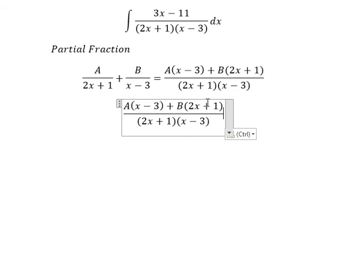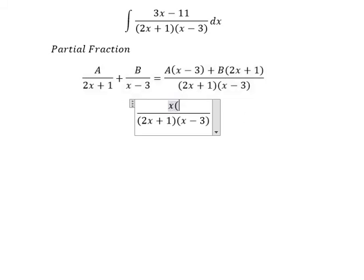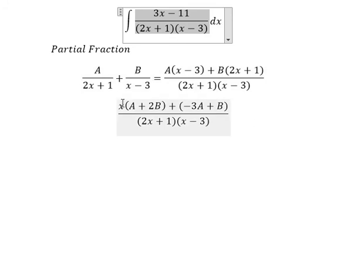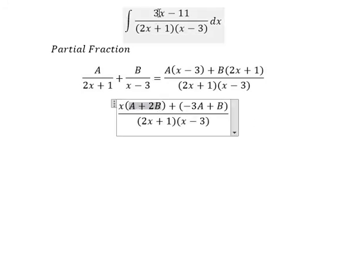And now we do factorization. We have x and x. So we put A plus 2B. Now the next one, we have negative 3A plus B. Now let's compare for the fraction over here. You can see that A plus 2B equals to number 3, and negative 3A plus B equals to negative 11. So we can create the system of equations.